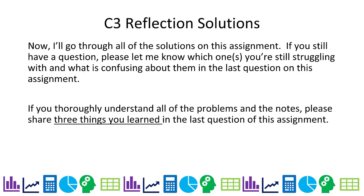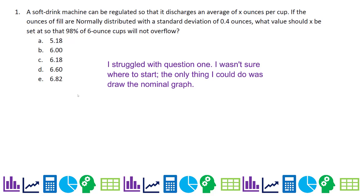We're going over the C3 reflection, which primarily covers probability, normal distribution, and getting values from probabilities. We'll be doing a mix of problems. A soft drink machine can be regulated so discharge is an average of X ounces per cup. If the ounces of fill are normally distributed with a standard deviation of 0.4 ounces, what value should X be set at so that 98% of six-ounce cups will not overflow?